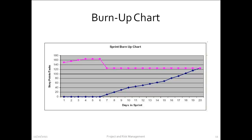This is a similar chart known as a burn up chart. Rather than counting down from what you have to implement, you're counting up. The pink line is the total amount of stories to implement and the blue line is the number of stories implemented at each iteration. As you implement more and more stories, the blue line catches up with the pink line, and when the two meet, the project is considered over.